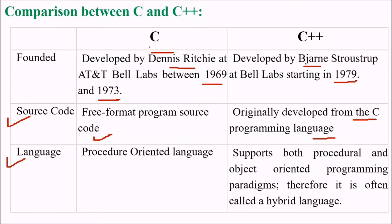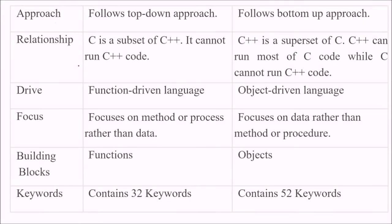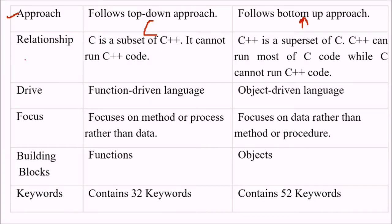In terms of language, C is a procedural or procedure-oriented language, while C++ supports both procedural and object-oriented programming paradigms, making it a kind of hybrid language. With respect to approach, C follows a top-down approach while C++ follows the bottom-up approach.